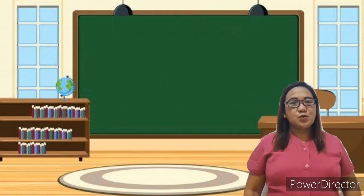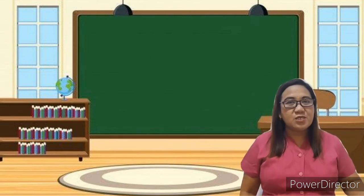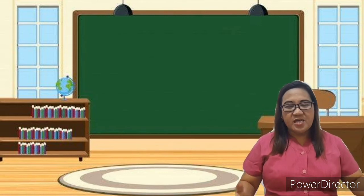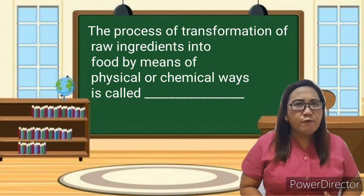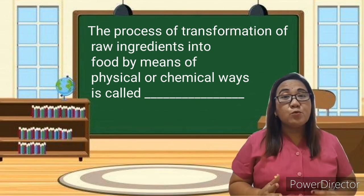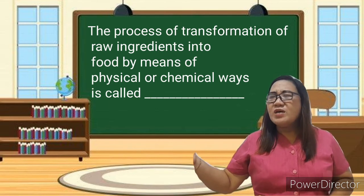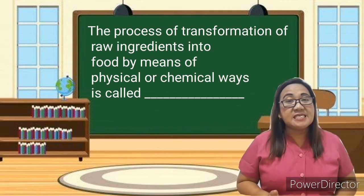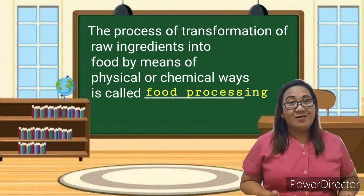To assess your understanding and learning on the lesson discussed, let's listen to the question. The process of transformation of raw ingredients into food by means of physical or chemical ways is called — blank. Yes, Raven, what is your answer? Very good! Raven is listening because he answered: food processing. Very good, Raven!